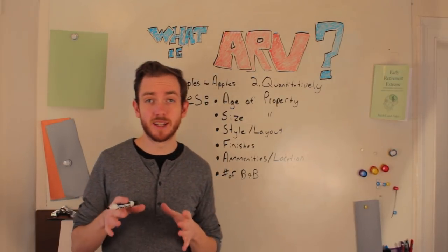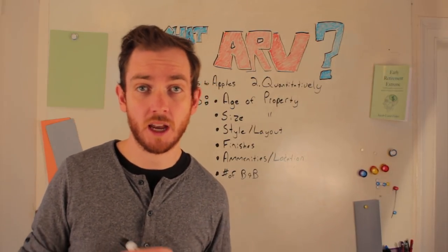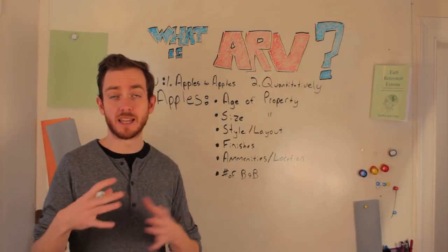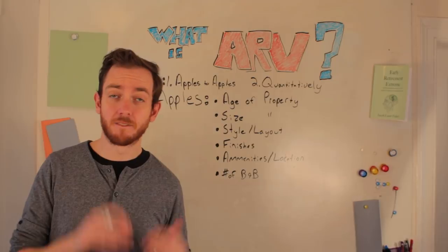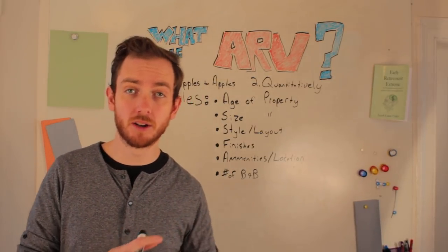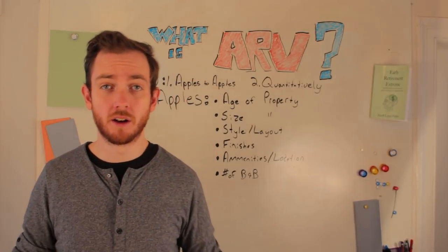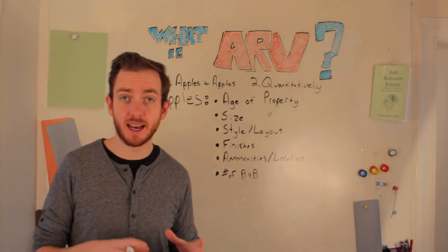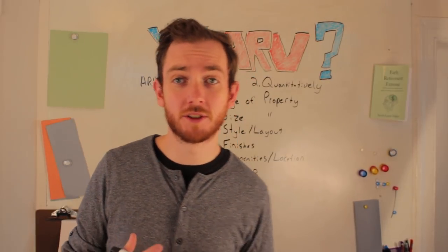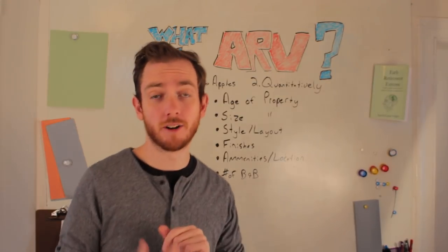The same applies to style and layout. Even in the exact same subdivision on the exact same street, not all houses are built equally. For example, in some neighborhoods I invest in near Fanshawe College, about three or four different styles of houses were built — things like a back split, a raised ranch, a bungalow, and a more traditional two-story family home. It doesn't make sense to compare that bungalow against a raised ranch, because the raised ranch generally has better features like vaulted ceilings and a more picturesque street front.